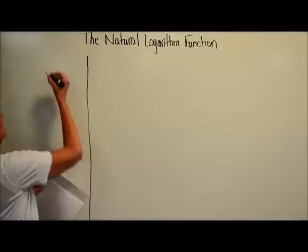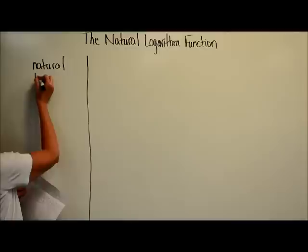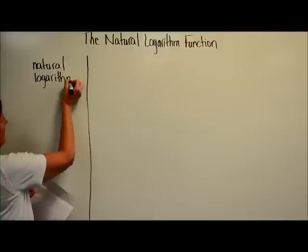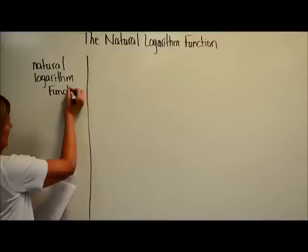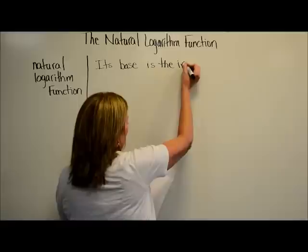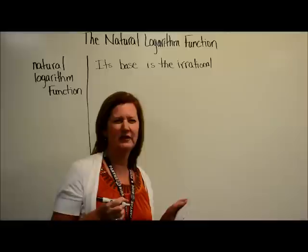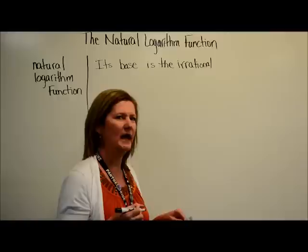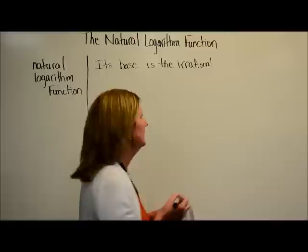Today we're going to look at the natural logarithm function. A natural logarithm function has a base that is an irrational number. Remember, irrational numbers never repeat — like pi, the square root of 3, stuff like that.